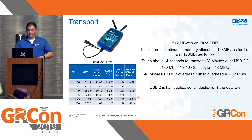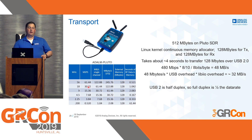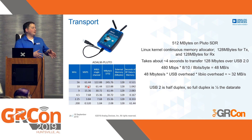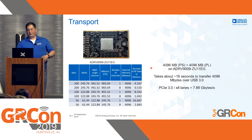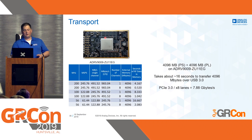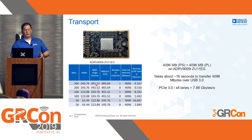USB is half-duplex, so full-duplex cuts throughput to about half — roughly 32 megabytes per second, allowing streaming at about 7 mega samples per second one way. USB3 is full-duplex, and you can still store half a second of data at 61.44 MSPS and stream it out afterward. Some platforms have up to 8 RF channels sampling at 245 MSPS — that's 491.52 megabytes per second per IQ channel; times 8, you can fill 4 GB in half a second.